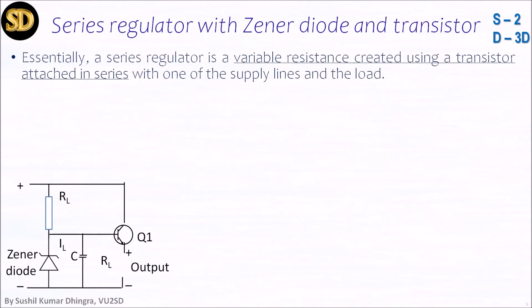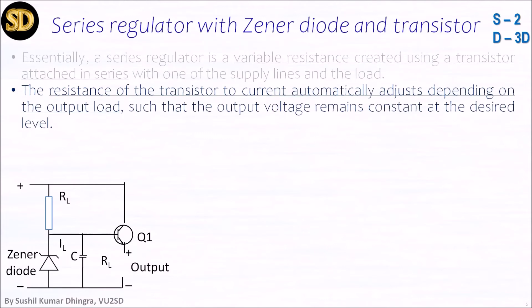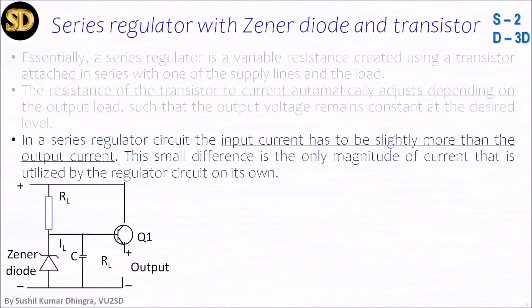A series regulator is a variable resistance created using a transistor attached in series with one of the supply lines and to the load. Because we are taking more current, we are using a transistor to drive it. The Zener diode is just giving a reference voltage, but to give a load as a buffer, we are using a transistor Q1. The resistance of the transistor to current automatically adjusts depending on the output load such that the output voltage remains constant at a desired level. In a series regulator circuit, the input current has to be slightly more than the output current. The small difference is the only magnitude of current utilized by the regulator circuit on its own, as shown on your screen.